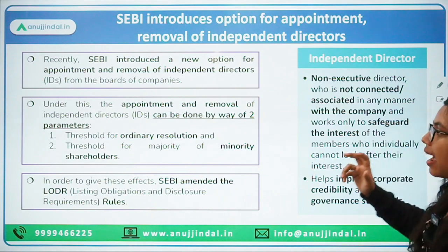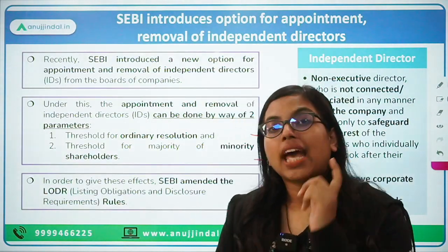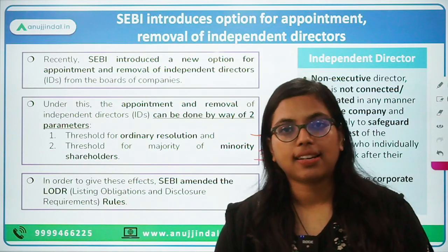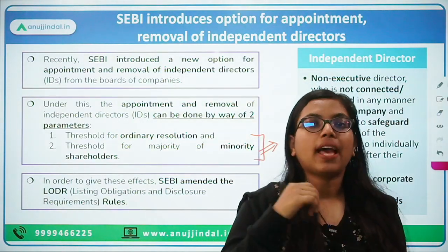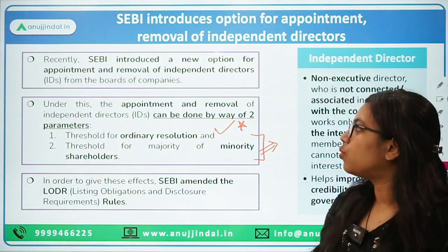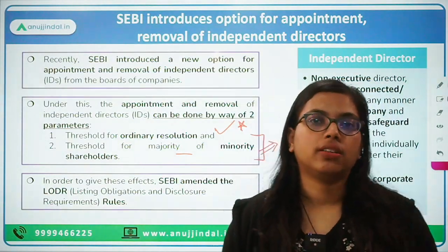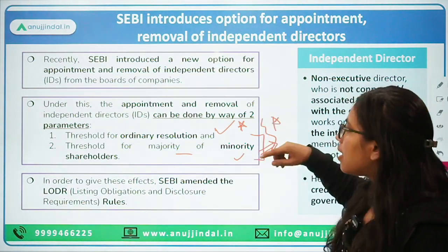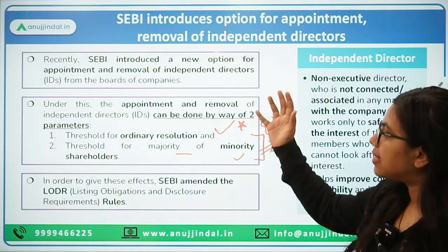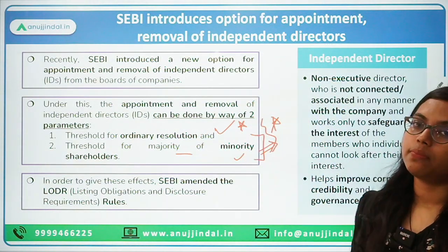The key point is that both thresholds must be achieved together. If 75% special resolution is not achieved, then we go for these two thresholds. First, we check if more than 50% of people have voted for the person — ordinary resolution. Second, we check if majority of minority shareholders have also voted in favor. If both these happen together, then the person would be appointed as an independent director. The same process applies for removal.